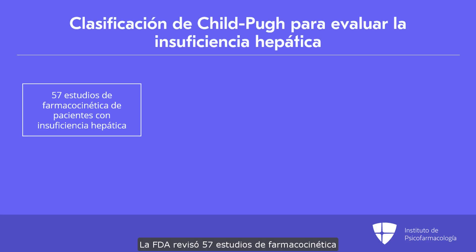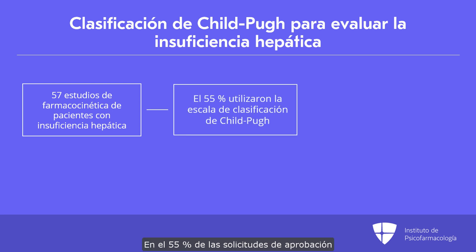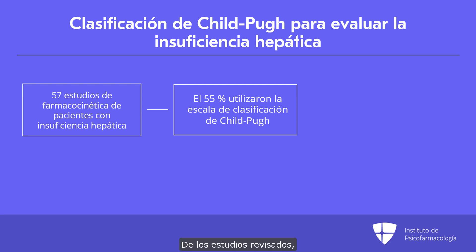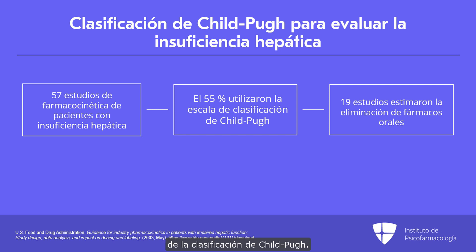The FDA reviewed 57 pharmacokinetic studies in patients with hepatic impairment of varying degrees among new drug applications in the mid-90s. They found that 55% of those applications used the Child-Pugh scale to assess hepatic impairment. Of those studies surveyed, 19 also had estimated oral drug clearance in normals and in patients with more than one Child-Pugh category.